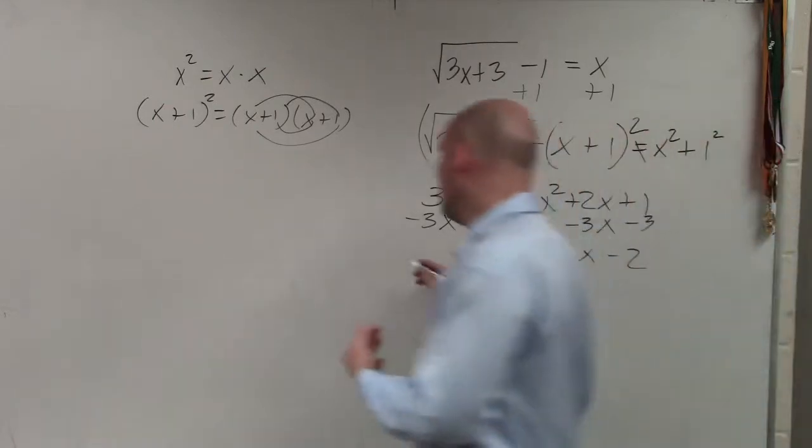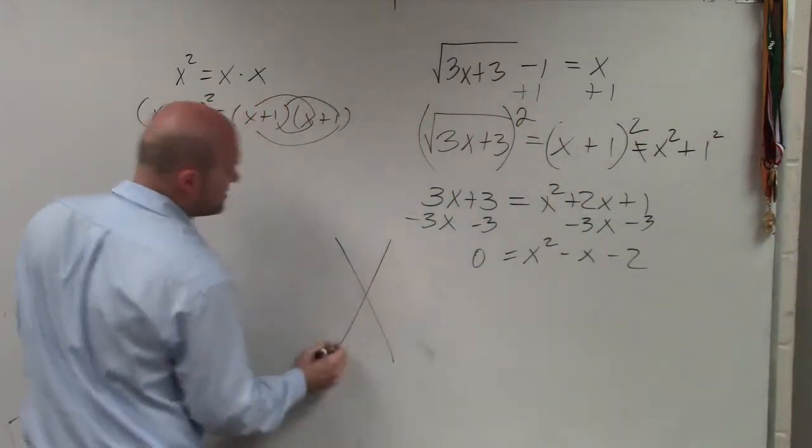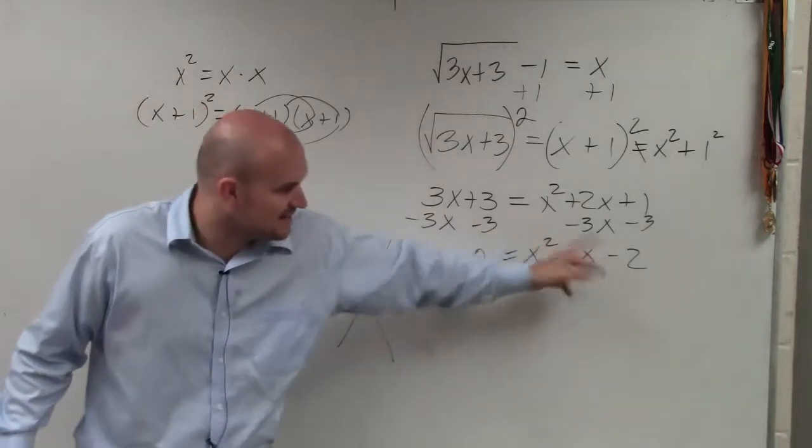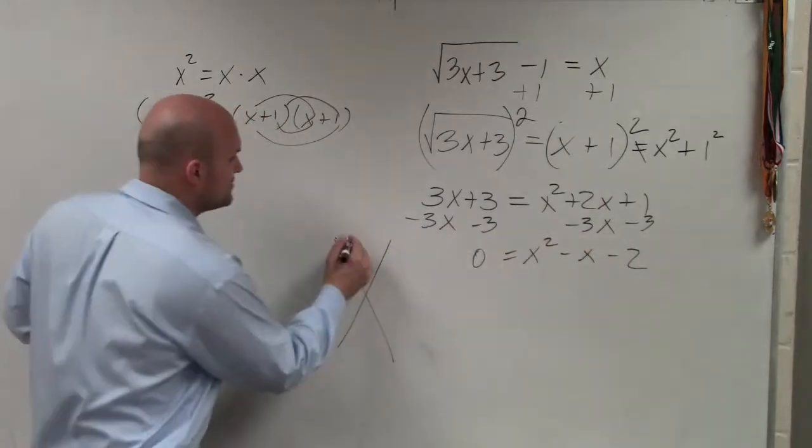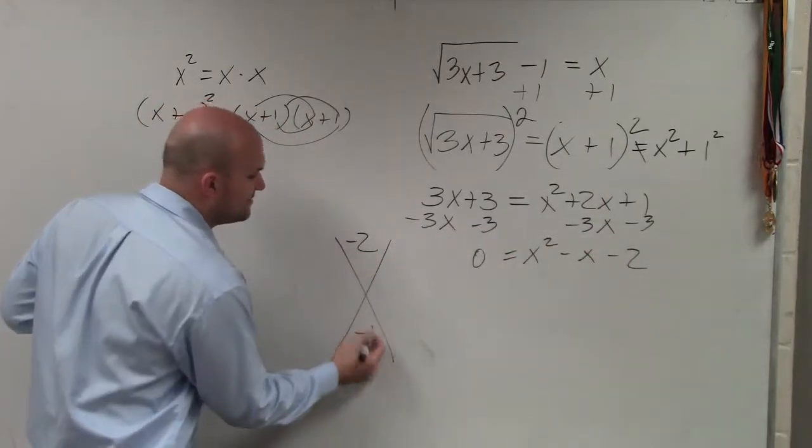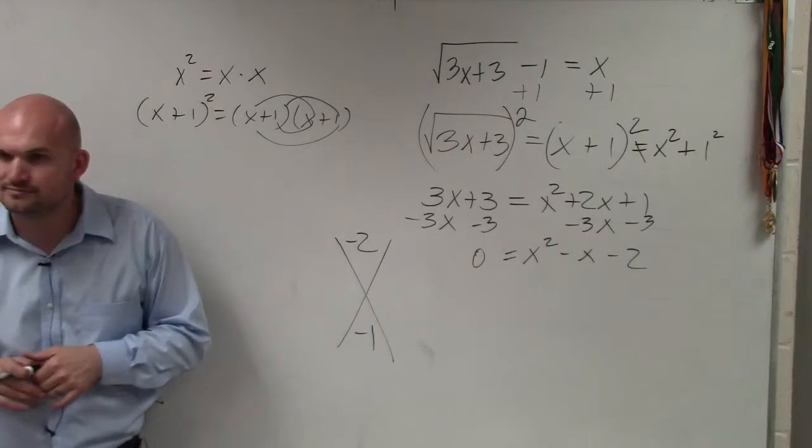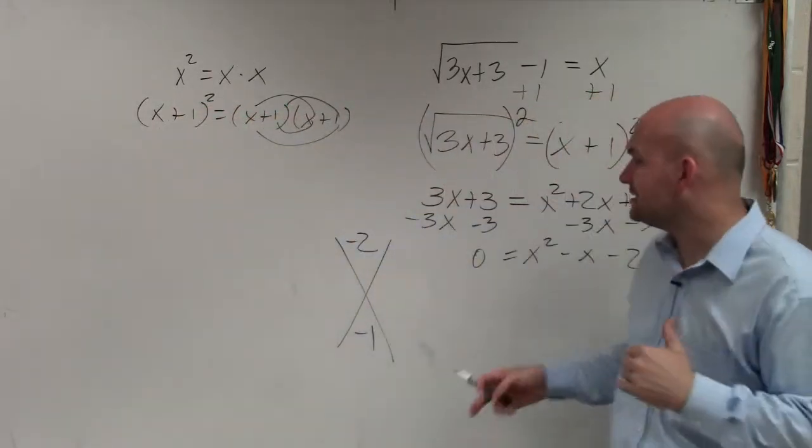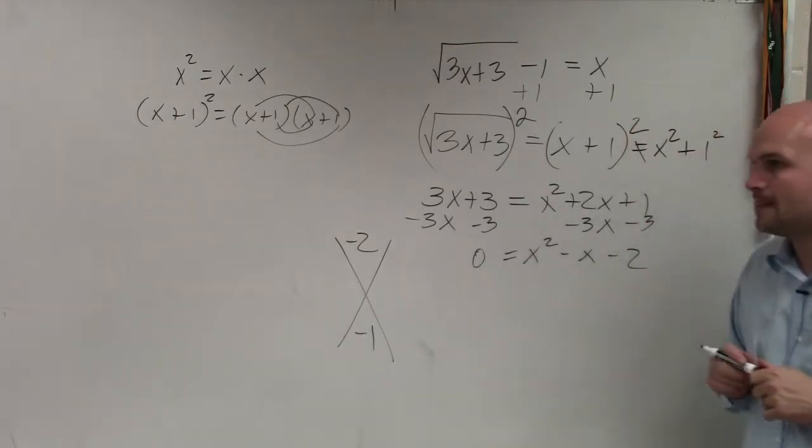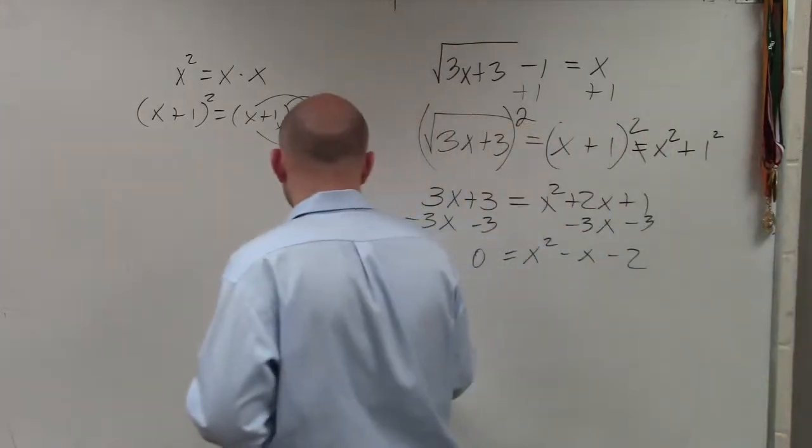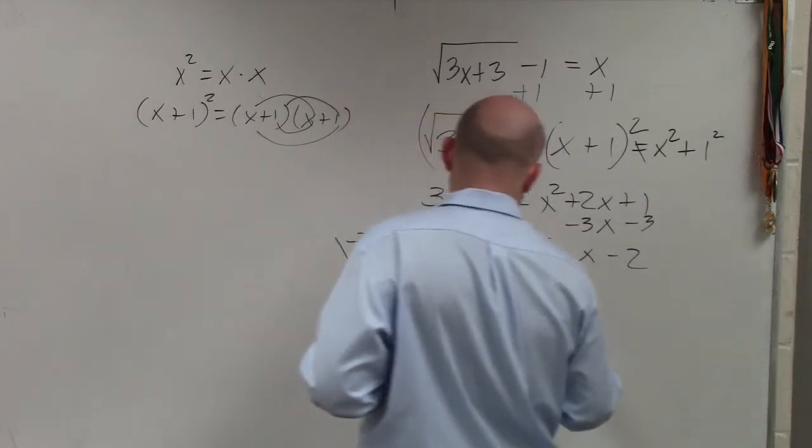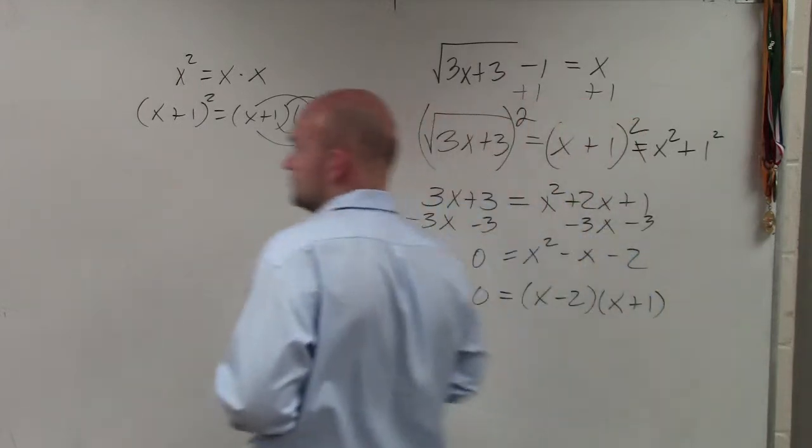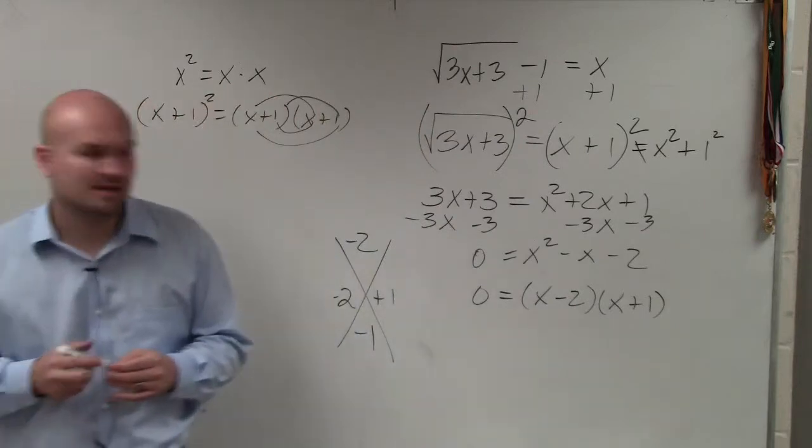So now, I can solve this by looking into factoring first. If factoring doesn't work, I can look into using quadratic formula. Remember, we do a times c. a is my 1. c is negative 2. So I do what two numbers multiply to give you negative 2, and then add to give me negative 1. What two numbers multiply to give you negative 2, and add to give you negative 1? 2, negative 2, and then positive 1. Negative 2, positive 1. 0 equals x minus 2 times x plus 1, right? Equals 0.